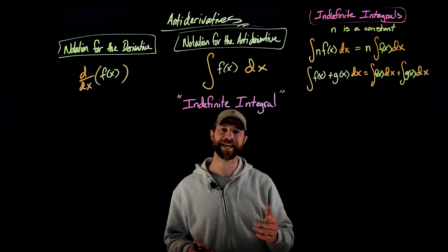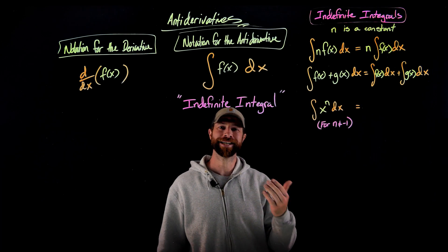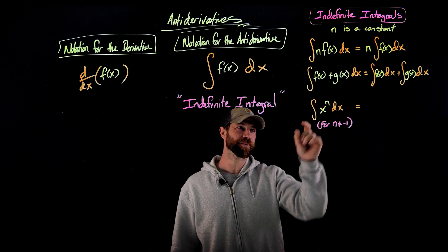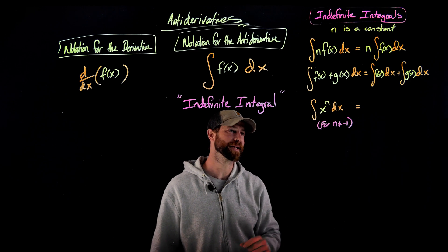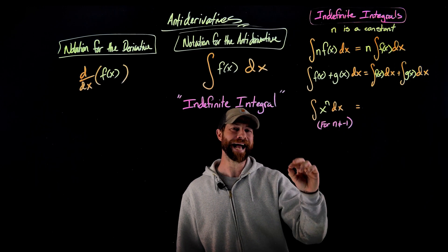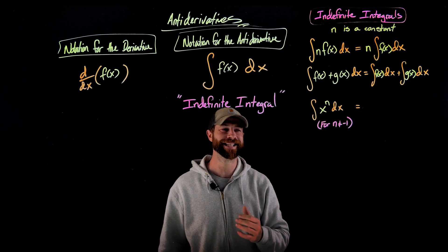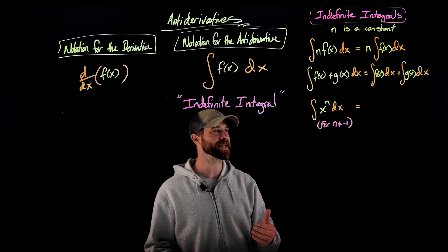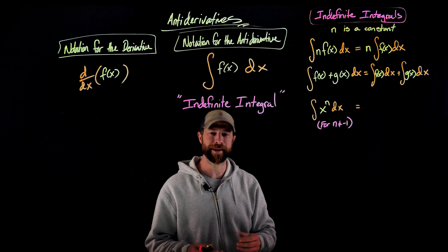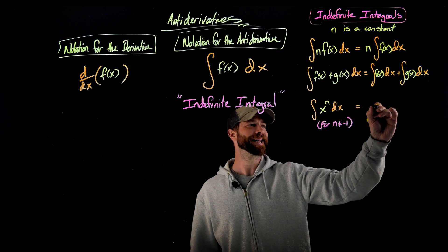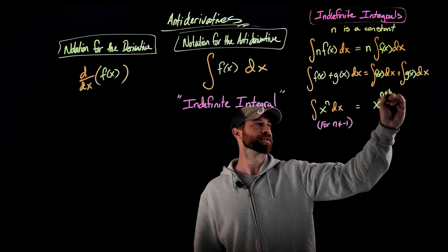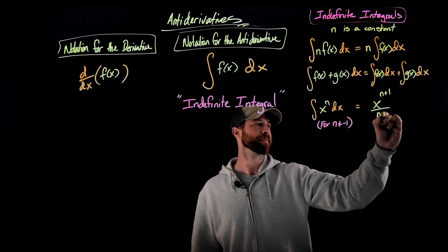The first one here is the anti-power rule. So if we're integrating x to the n, where n is this constant exponent, importantly here also is n cannot be negative one. We'll show you in one second what happens when n is negative one. But if we're differentiating, this is the anti-power rule. And what we get is x to the n plus one divided by n plus one.